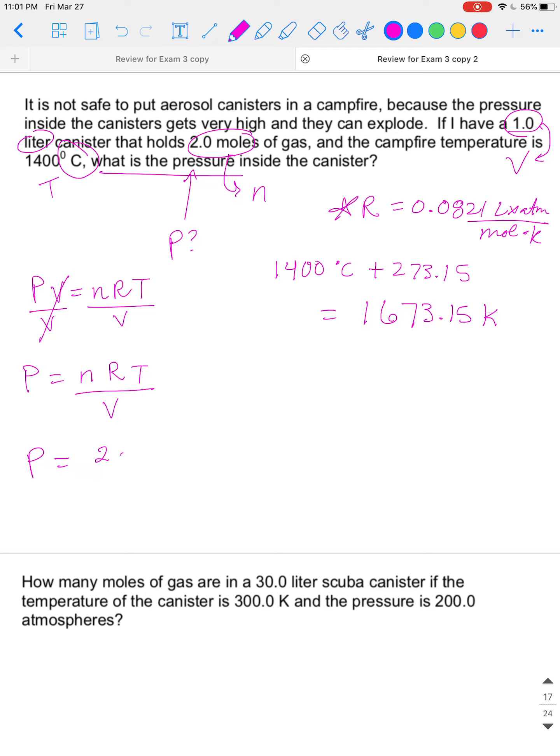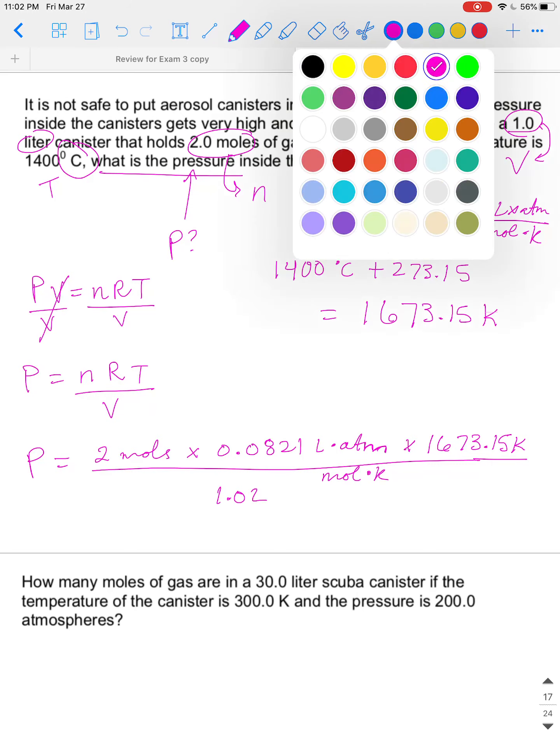So here, pressure equals number of moles, which is two moles, 2.0 times R, which is 0.0821. And again, I'm going to write the units the way I was illustrating or indicating last time. You can, it's equally fair to do this. Liters times ATM on the top and moles times Kelvin on the bottom. These are all the units of R. It's okay to write them this way too, if that helps you. If it confuses you, just do it the way we did it in the previous problem. Our temperature is the last thing we multiply on top, 1673.15 Kelvin. And on the bottom, we should have 1.0 liters.